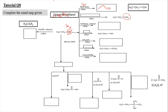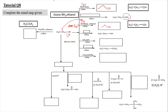Reacting bromoethane with KCN: CN⁻ acts as a nucleophile, attacking the carbon and removing Br via SN2 to give CH₃CH₂CN. For the next reaction, water acts as a nucleophile — its lone pairs allow it to attack the carbon and remove Br, replacing it with OH to give ethanol. Water acts similarly to ammonia, with two lone pairs available for nucleophilic attack.